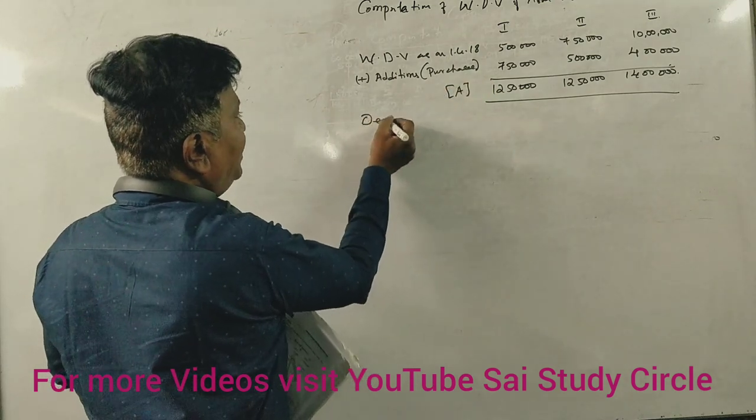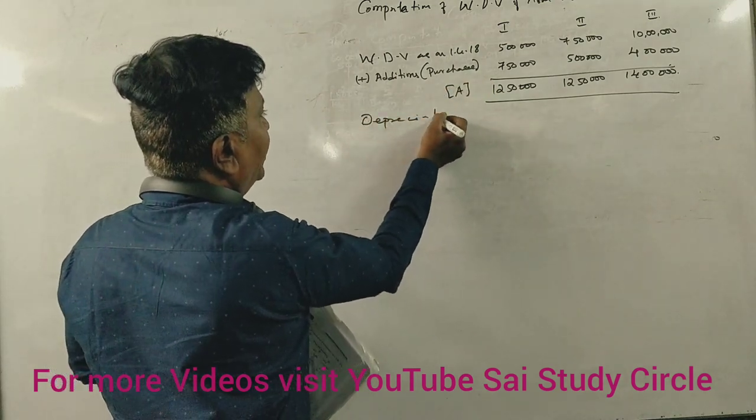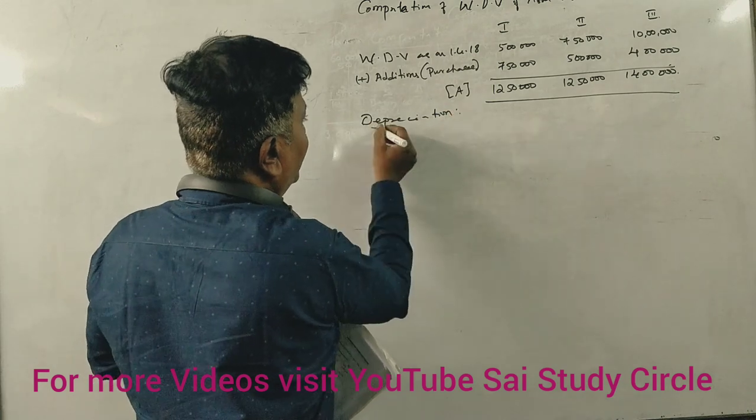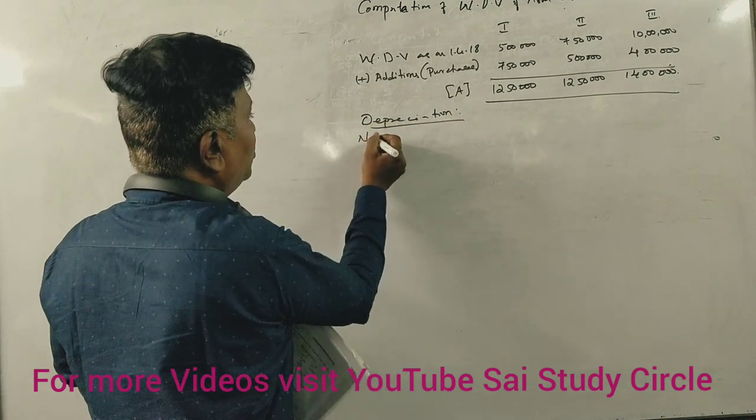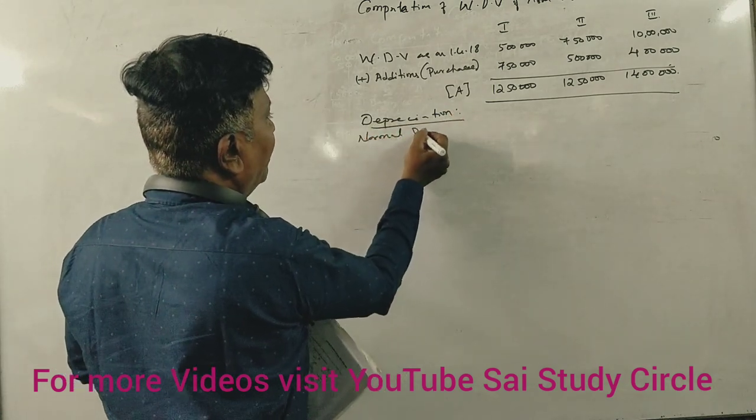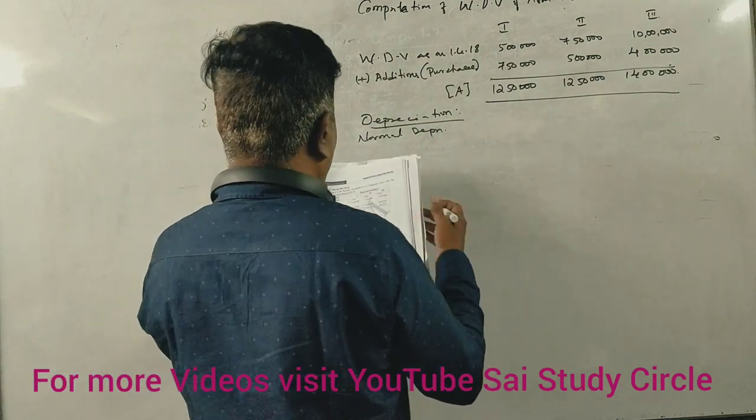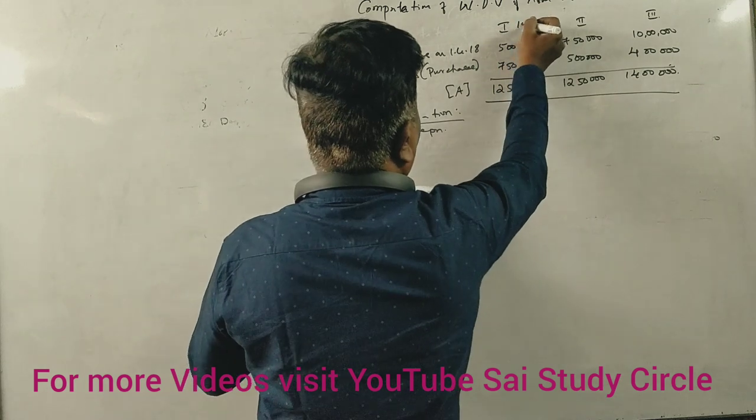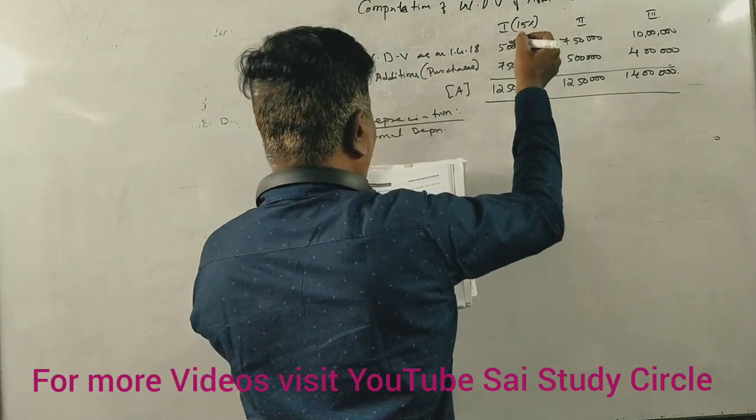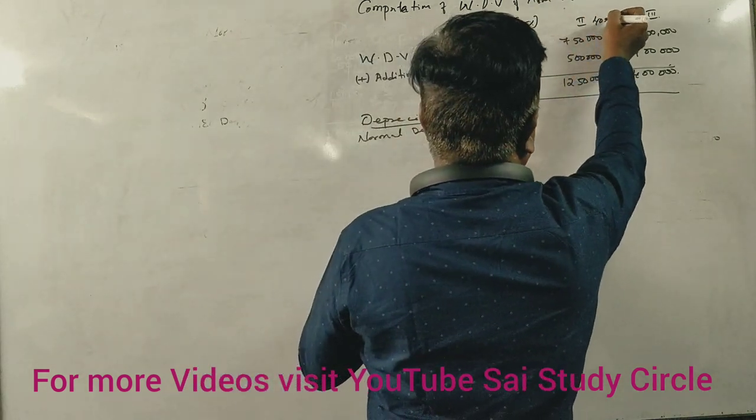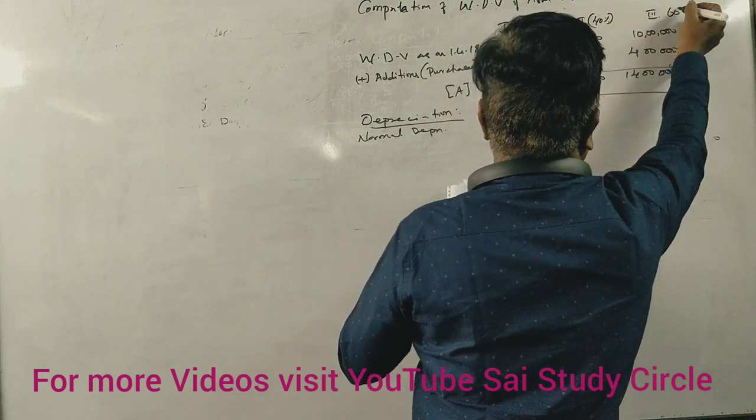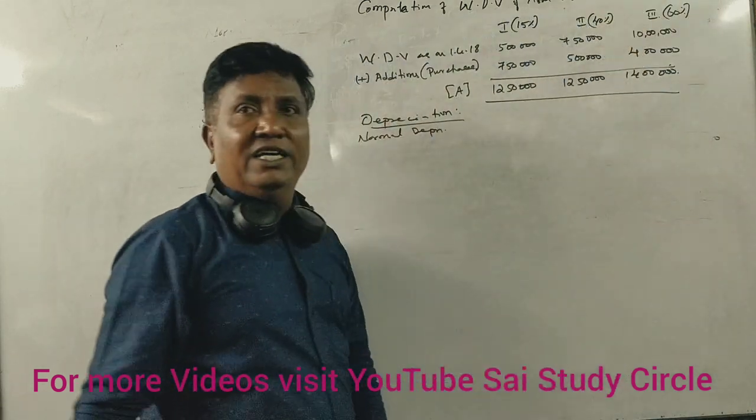What is depreciation? First, normal depreciation. Block 1, 15%. Block 2, 40%. This is 60%. Correct? Yes, sir.